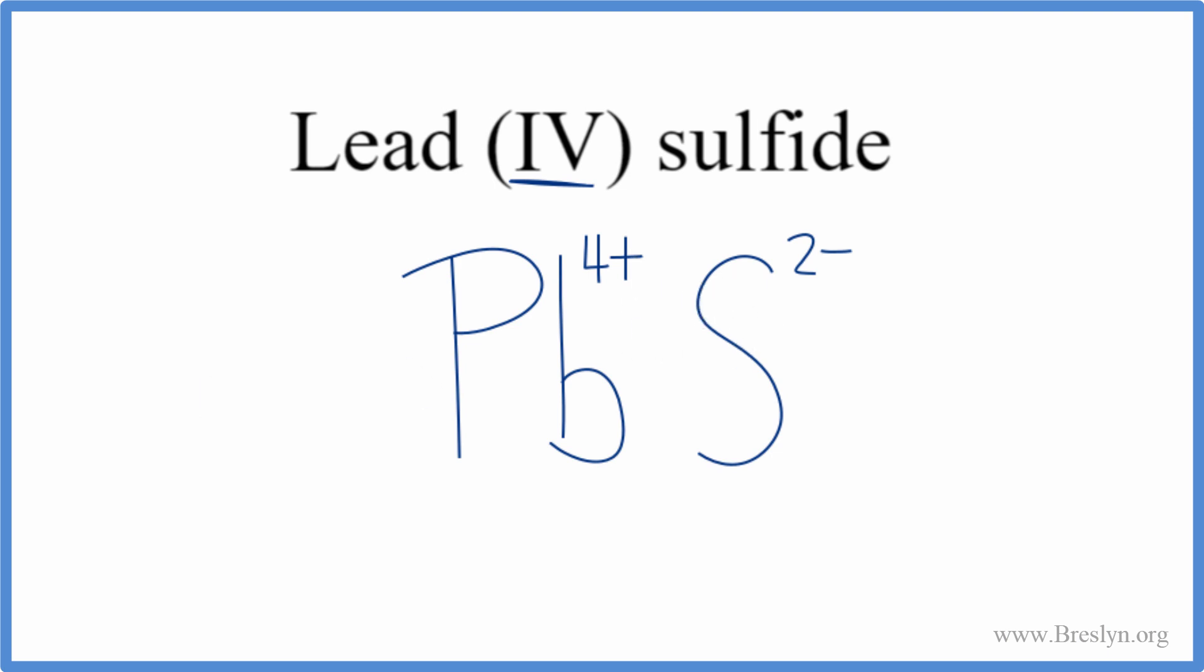To do that, we can change the subscript down here. So if we put a two here, that means we have two sulfur atoms, each one is two minus. Two times two minus, that's four minus. We have one lead, one times the four plus, that's four plus. These two numbers, they add up to zero, the net charge is zero.